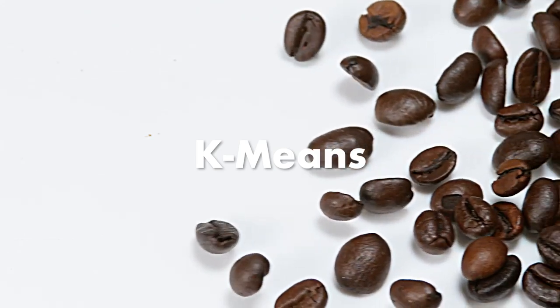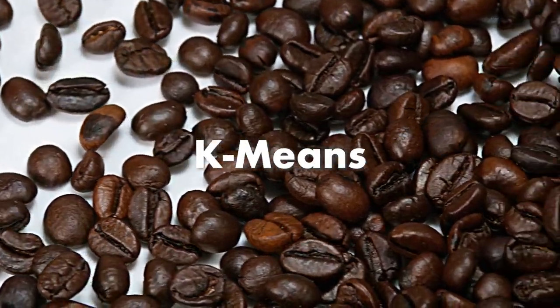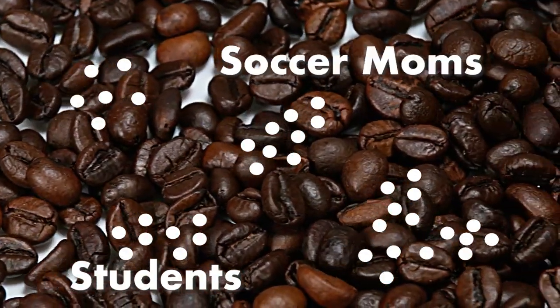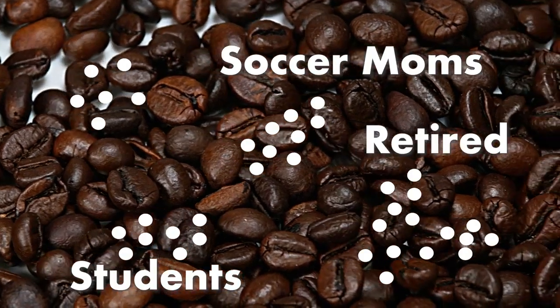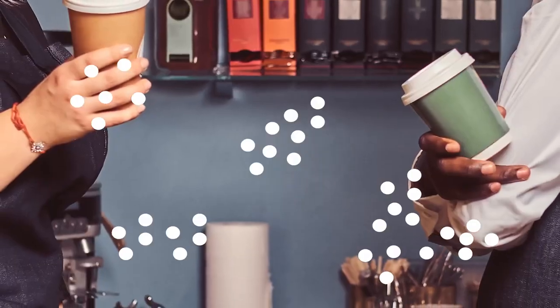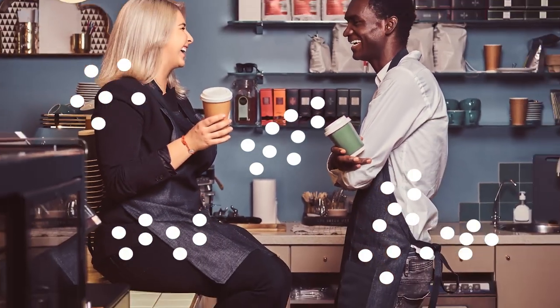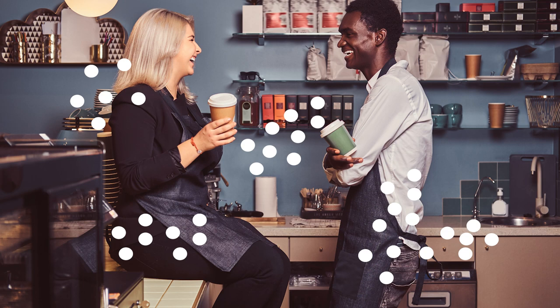Because K-means knows it needs to find four groups, it classifies the data into the groups of students, soccer moms, retired, and others. By segmenting your customers this way, the cafe can better address and target them in a customized way — deciding how to design a new menu, a new product, and thinking about new promotions.